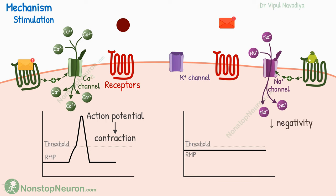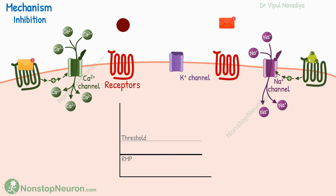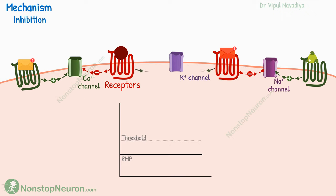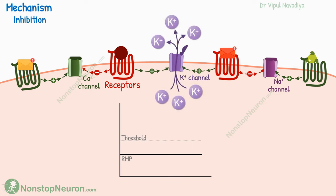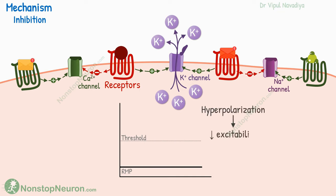Or it makes the cell less negative, which increases its excitability and also increases overall muscle contraction. Thus, increasing positive ions inside the cell causes contraction. On the other hand, for inhibition, those receptors are activated that cause closure of calcium or sodium channels. This prevents the entry of positive ions, or they open potassium channels, causing the exit of positive ions. Both of these hyperpolarize the membrane, making it more difficult to produce action potentials, resulting in muscle relaxation.